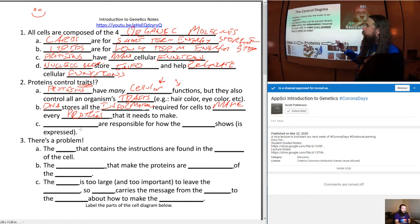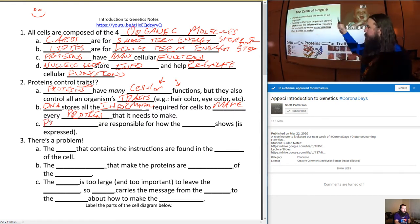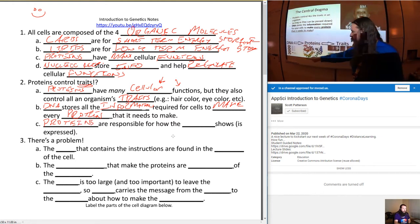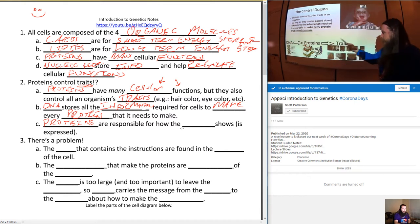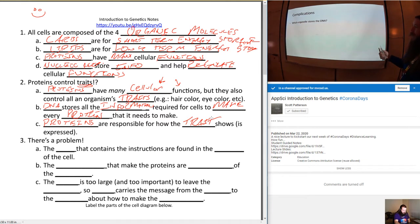So part of that doing, that regulating, is the instructions to make these proteins that we'll need for actually controlling all of our traits. Proteins are responsible for how the trait is shown, how it is expressed. The nucleic acids have the instructions for making those traits. DNA stores all the information required for cells to make every protein that it needs to make.